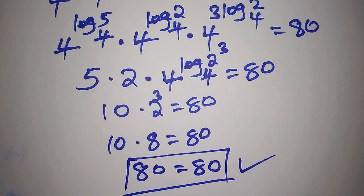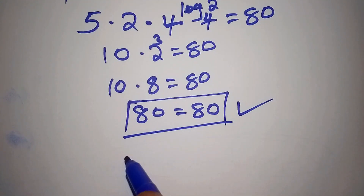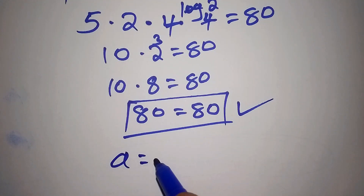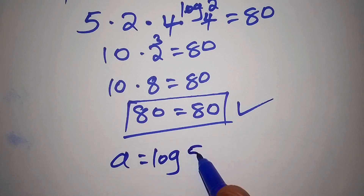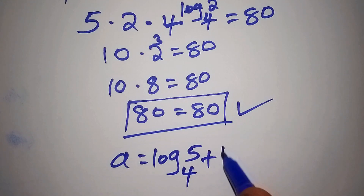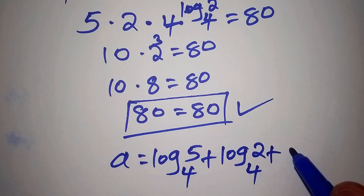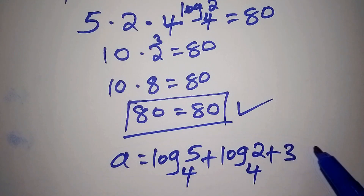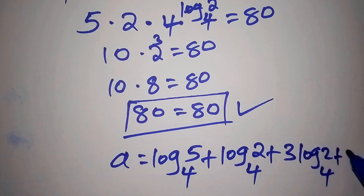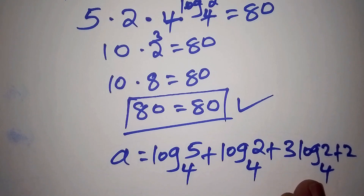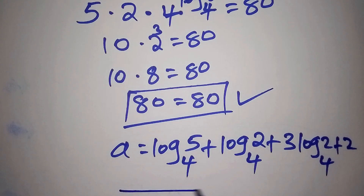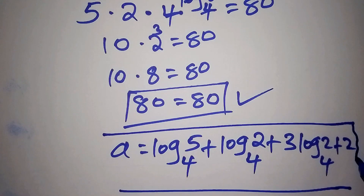So the value for a is: the log of 5 to the base of 4, plus the log of 2 to the base of 4, plus 3 times the log of 2 to the base of 4, plus 2. This is the correct and final answer. If you loved how we worked out this math problem, don't forget to subscribe to our channel.